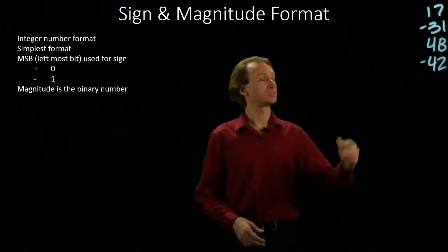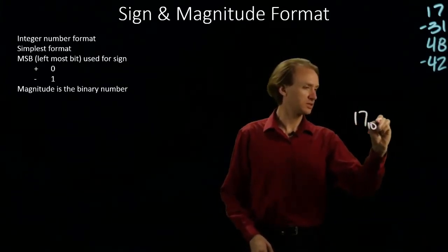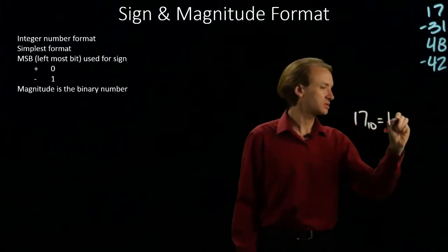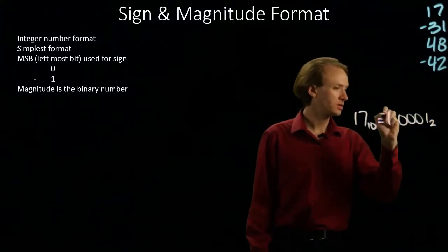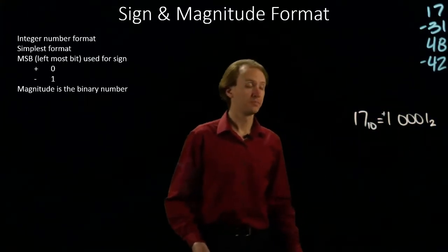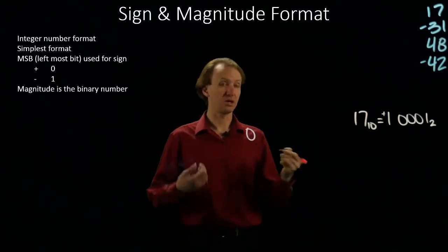My first number is 17. So 17 in decimal is 16 plus 1 in binary, and this is a positive number. Because it's a positive number, my sign bit will be a 0.